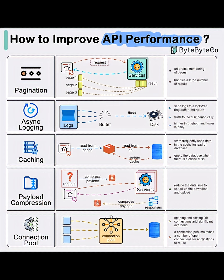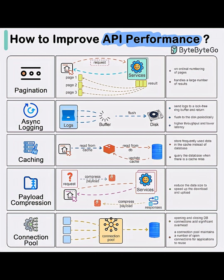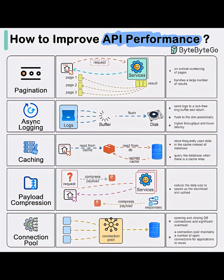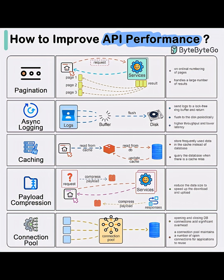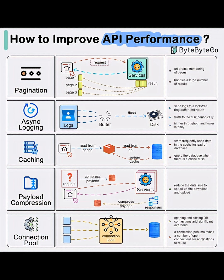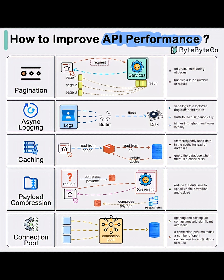1. Pagination. Instead of sending all data at once, the API breaks it into pages — like page 1, page 2 — sending only a limited number of results per request. This handles large datasets efficiently, reduces server load, and speeds up response time.